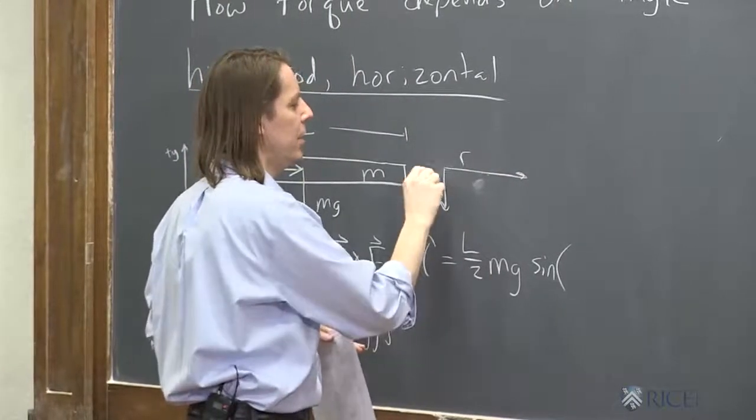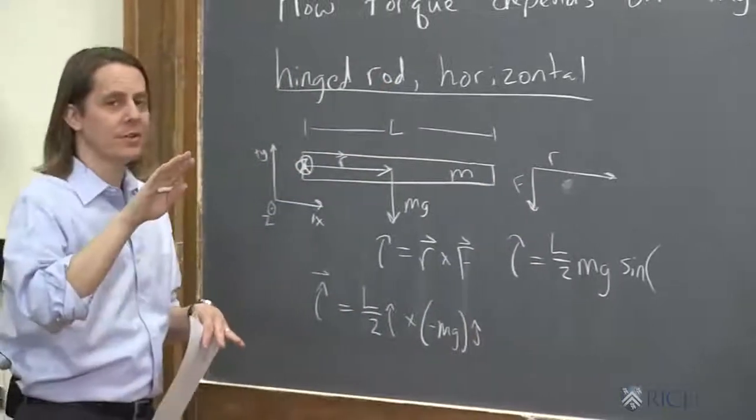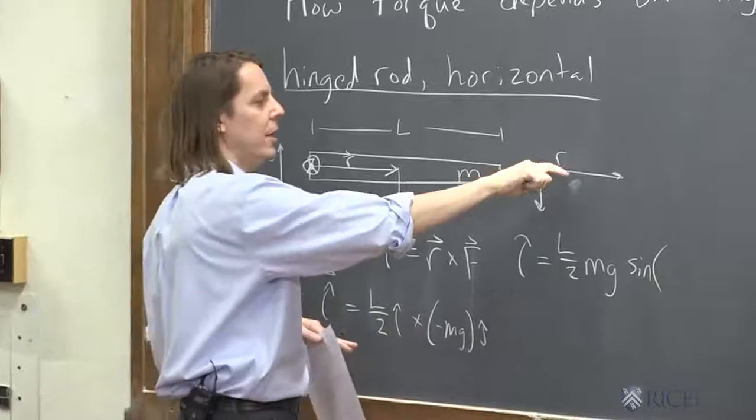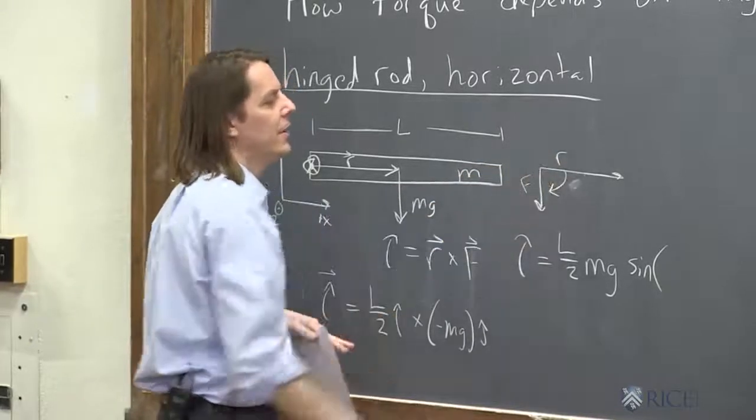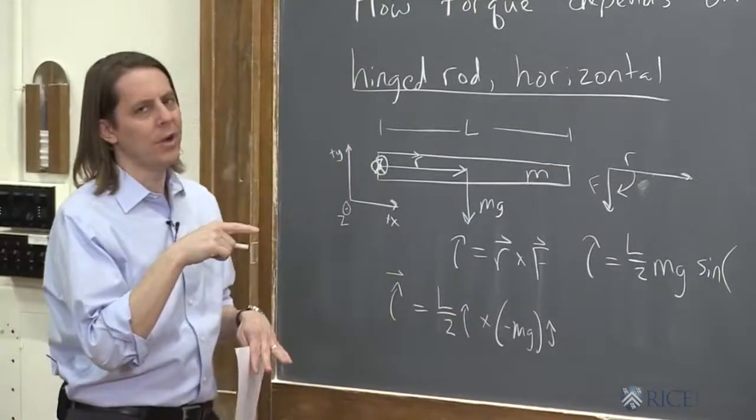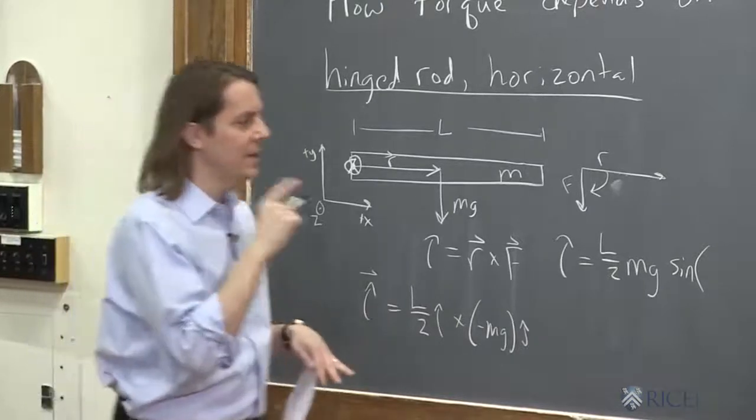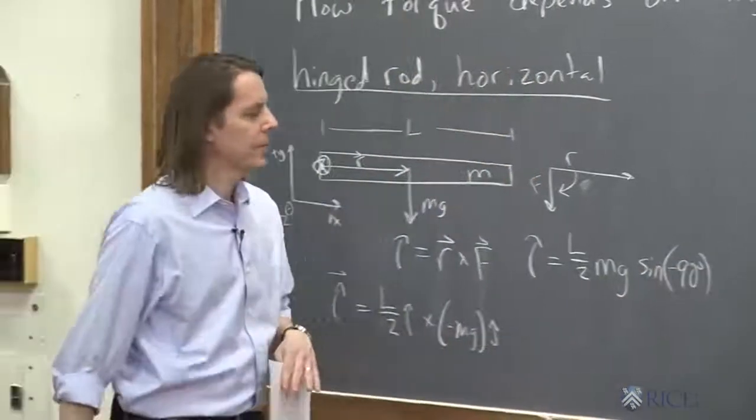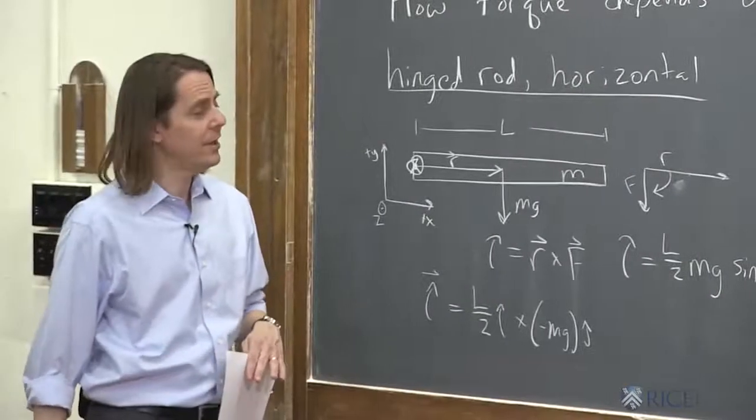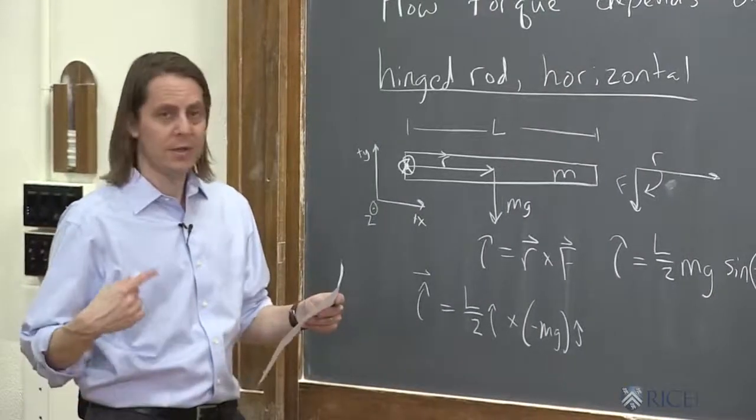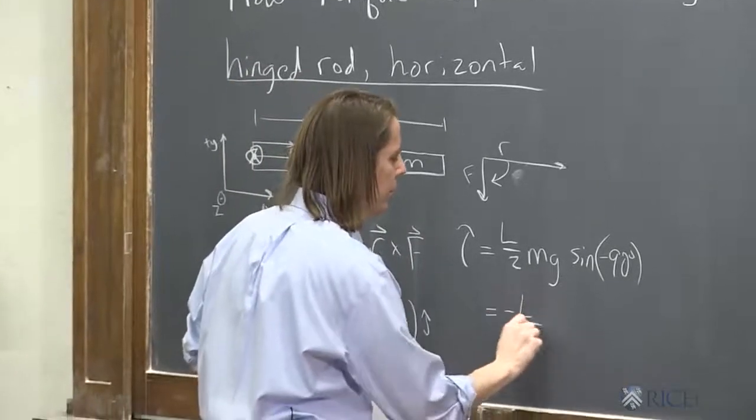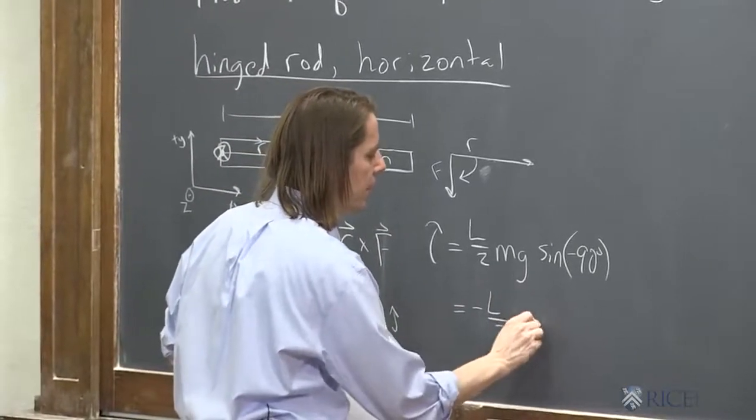You put them tail to tail. You draw R and then F is down. So there's R and there's F. And you get the direction by going R to F. Since it's R cross F, we start here and we go to there. And since we went clockwise 90 degrees, that's actually negative 90 degrees. So the sine of negative 90 is actually negative 1. So what that does is it says the answer, the torque, is minus L over 2 mg.